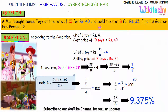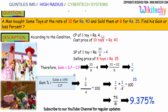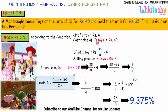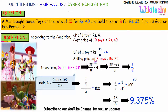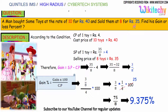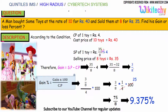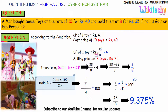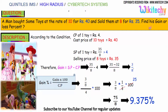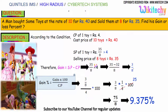According to the condition, the cost price of 1 toy is Rs 4, since the cost price of 10 toys is Rs 40. The selling price of 8 toys is Rs 35, so the selling price of 1 toy is 35 divided by 8, which is greater than 4. So it should be a gain. The question asks for gain or loss percentage — and here it is a gain, not a loss.